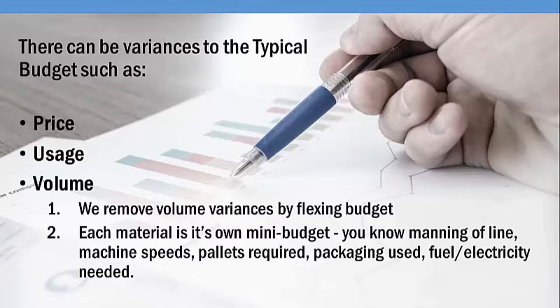The difference or variance is broken down into three basic areas. Price — did we spend more than we budgeted in terms of paying people or paying for raw material costs? Usage — did we use more or less raw material than we expected to? Or did we use more labor hours to convert the raw materials into a finished product?